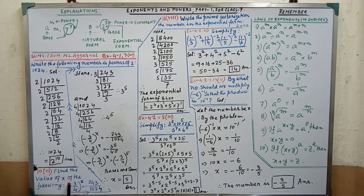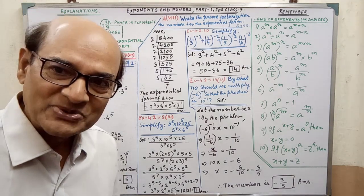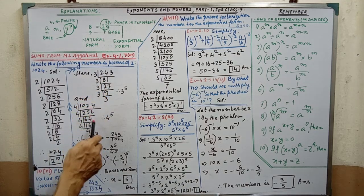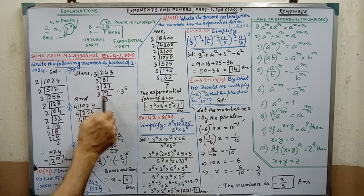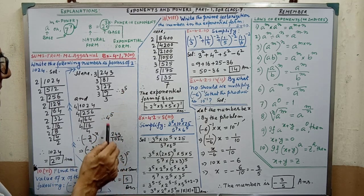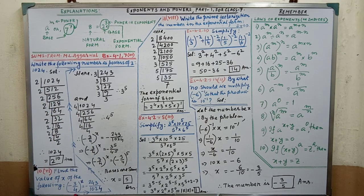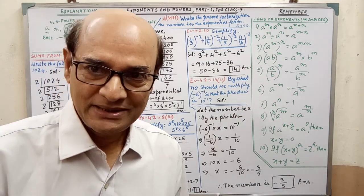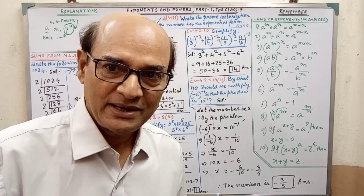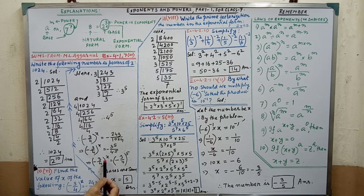Next, find the value of x: minus 3 by 4 whole to the power x equals a given expression. First, we have to find the base — without a base, power is not possible. By doing the LCM, we get 3 to the power 5 and 4 to the power 5 on the right side. So minus 3 by 4 whole to the power x equals minus 3 by 4 whole to the power 5. Since the bases are the same, therefore x equals 5. Sum is completed.